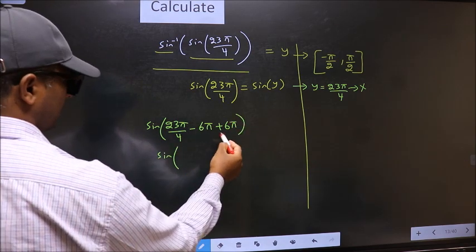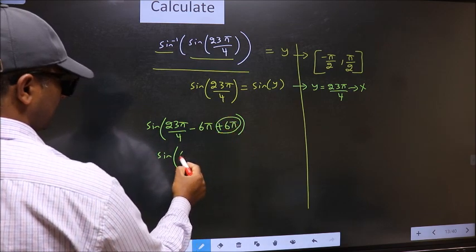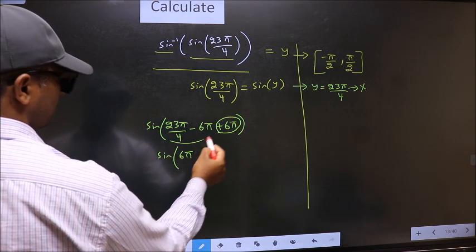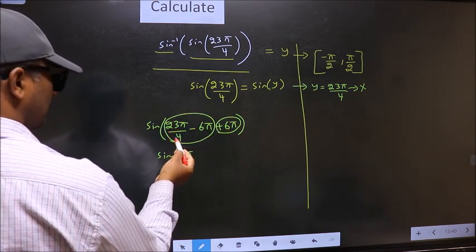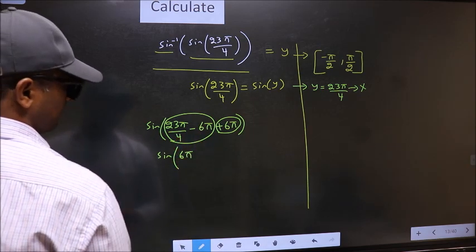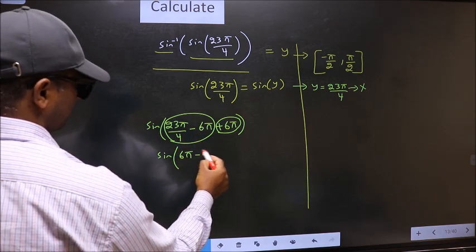Next. Now 6 pi I write at the start. This you calculate. 23 pi by 4 minus 6 pi. We get minus pi by 4.